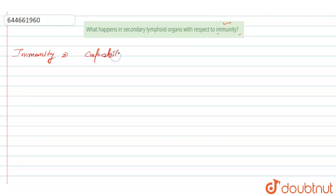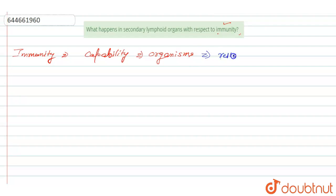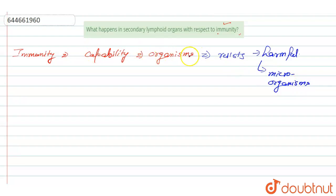Immunity is the capability of multicellular organisms in which they resist harmful pathogens or harmful microorganisms. So this is the immunity that is present in organisms.